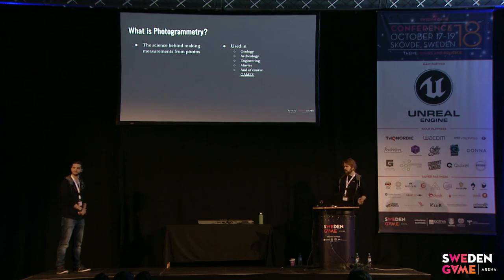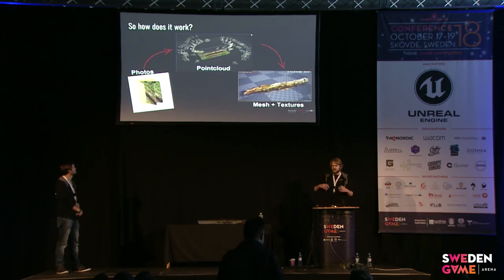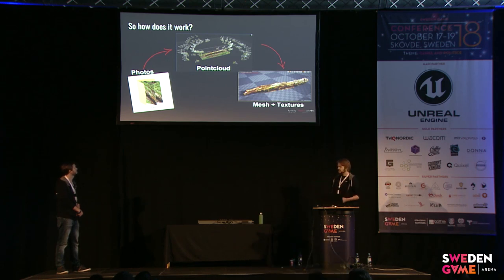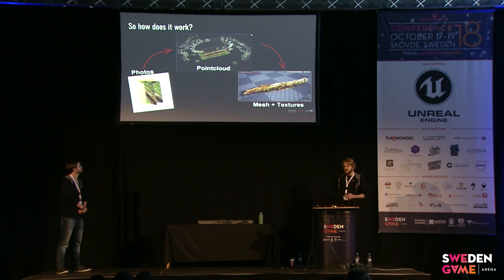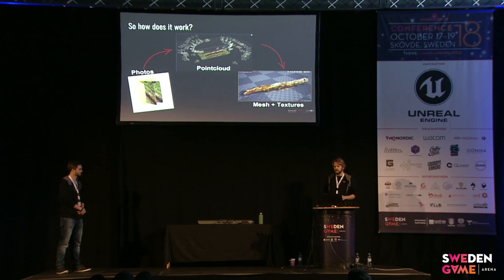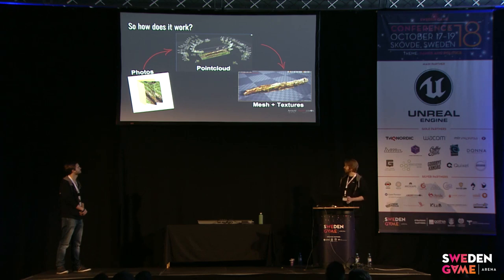Before I actually do an example of how I would use this in making an environment prop, I'm just going to do a little overview of how this works. We start with raw scan data — photos — that are pumped into a program that creates a point cloud. That is the 3D photo scanning software. What we get out from that is a mesh and textures that we can use in our games. That's just a broad overview, but I'm now going to do a more in-depth look.